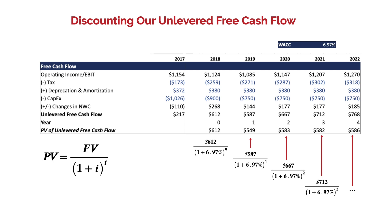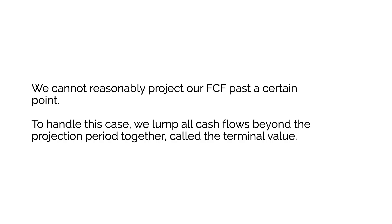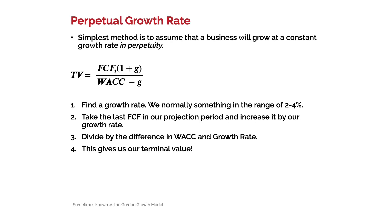We've done our discounting, but there's an issue: we cannot reasonably project free cash flow past a certain point. If you're looking 10 or 20 years into the future, you don't really know what any company is going to do. To handle this, we lump all cash flows beyond the projection period together — we call this the terminal value. There are two ways to figure this out. The simplest method is the perpetual growth rate: assume the business grows at a constant rate in perpetuity, normally in the range of 2–4%. Zero percent also works — that's building a margin of safety. We take the last free cash flow in our projection period, increase it by our growth rate, then divide by the difference of WACC minus the growth rate, and this gives us our terminal value. So: FCF of T times one plus G, divided by WACC minus G.